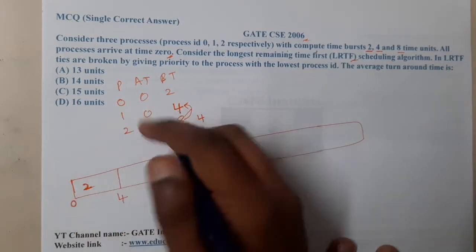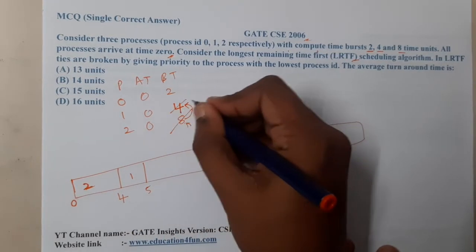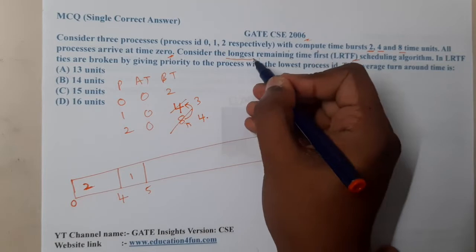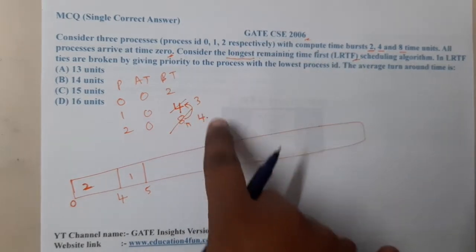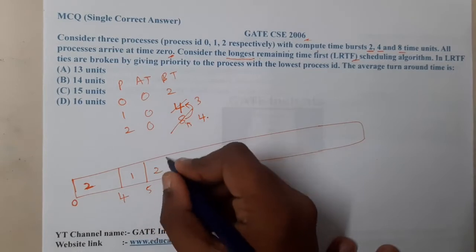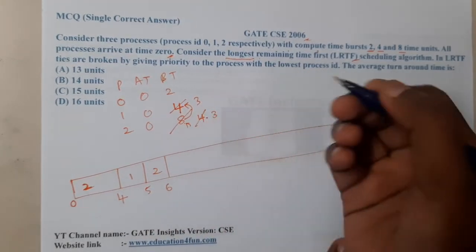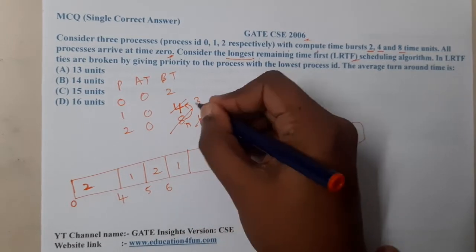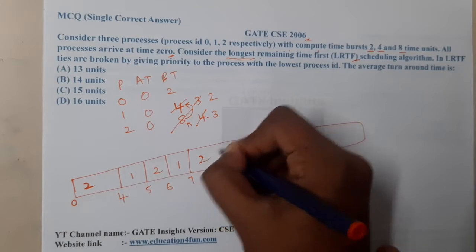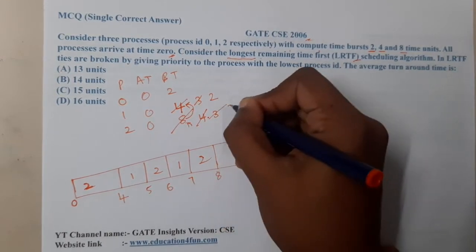Process 1 executes for 1 second. Now process 2 has the highest remaining time again, so process 2 runs for 1 second, dropping to 3. Again there is a tie, so process 1 gets the chance again. After 1 second it is at 2. Then process 2 runs again for 1 second. Now at time 8, all three processes have equal remaining times of 2.